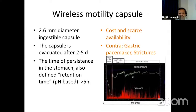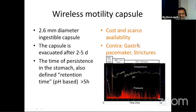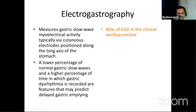The wireless motility capsule is a small ingestible device with electronics and a transmitter that records pH, pressure, and temperature for two to five days until evacuated. By measuring pH — since the stomach is highly acidic while the duodenum is not — we can determine when the capsule has passed the stomach; retention beyond five hours implies delayed gastric emptying. Disadvantages include cost, limited availability, and contraindications in patients with an implanted gastric pacemaker or esophageal, small bowel, or large bowel strictures.